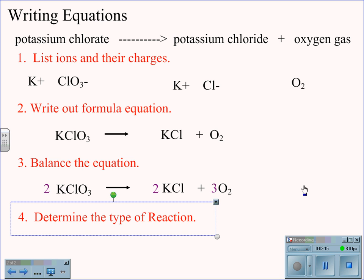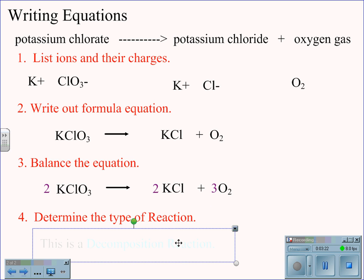To determine the type of reaction, we know that potassium chlorate is breaking down into potassium chloride plus oxygen gas, making this a decomposition reaction.